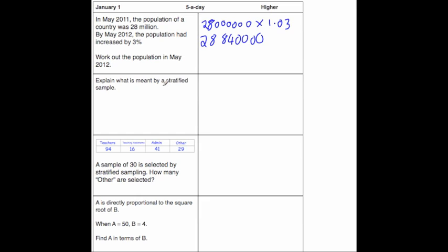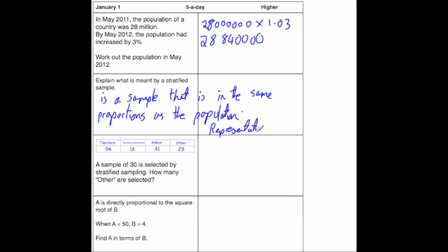Next question says explain what is meant by a stratified sample. So a stratified sample is when you take a sample and the sample is in the same proportions to the population. In other words, whenever it's representative of the population. So a stratified sample is a sample that is in the same proportions as the population.